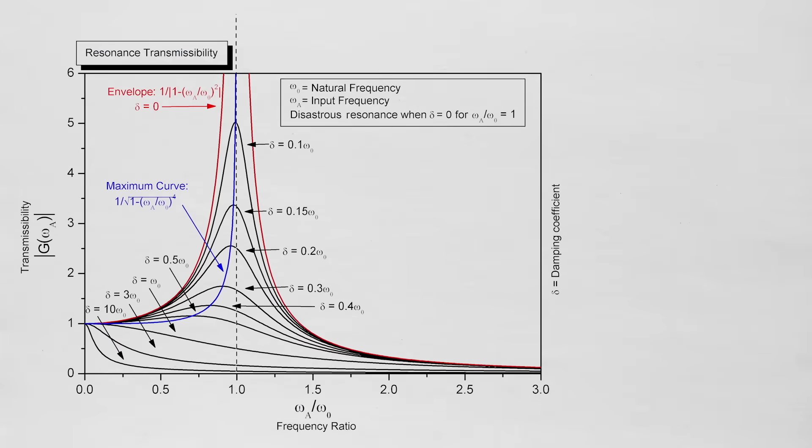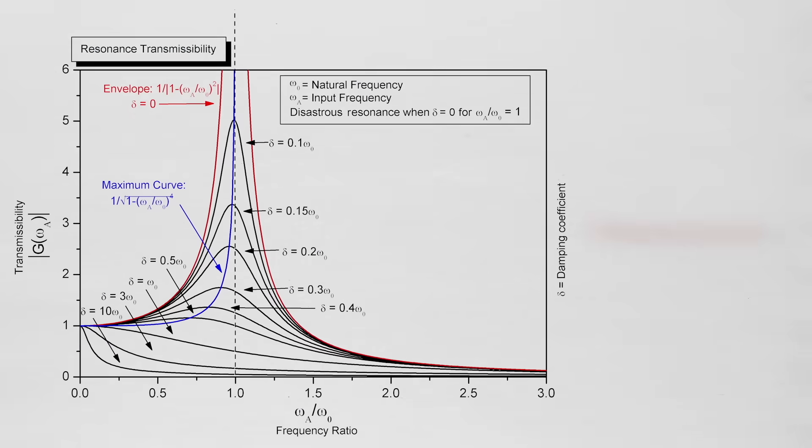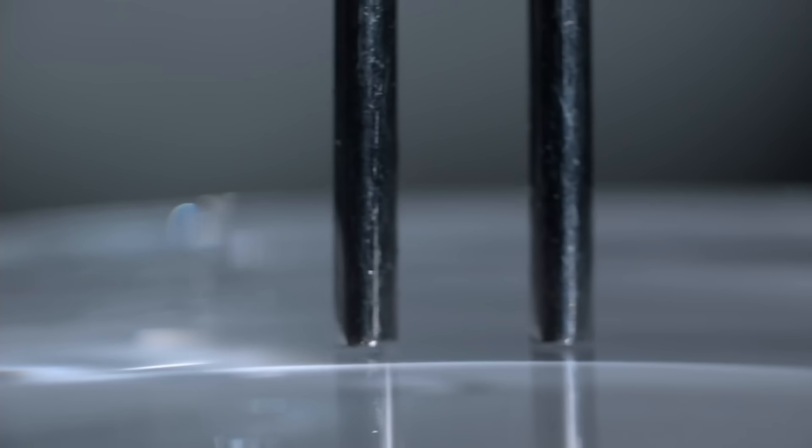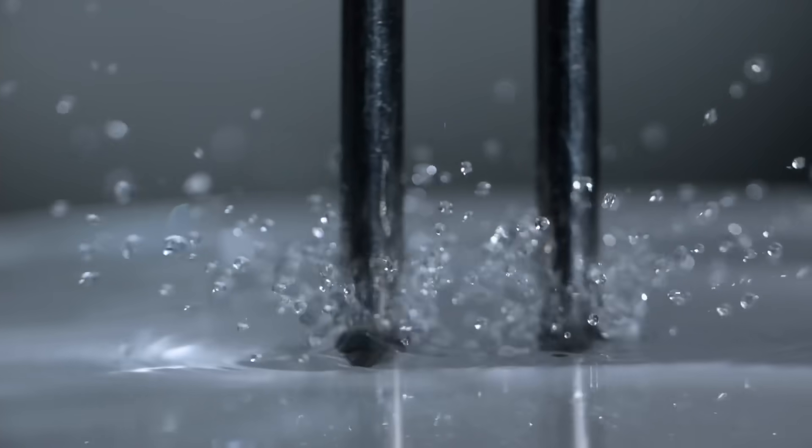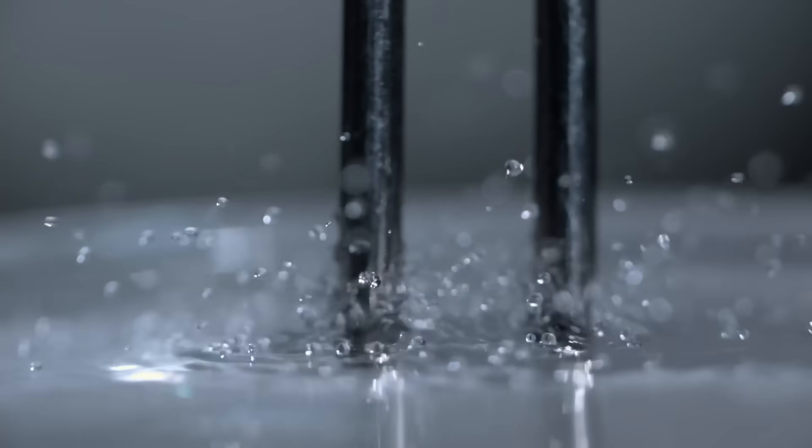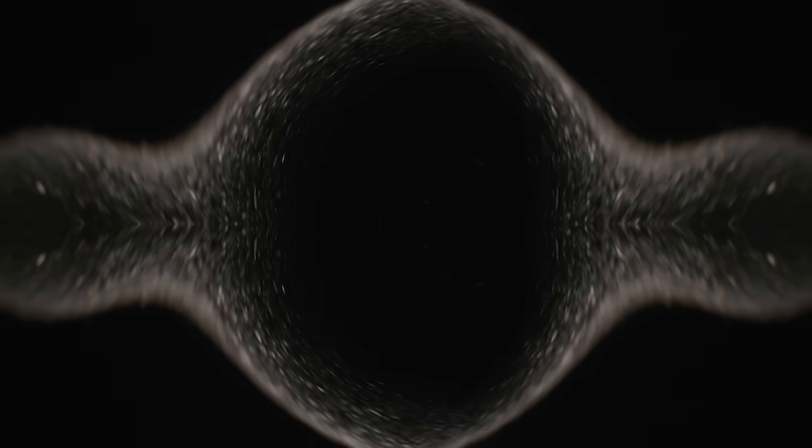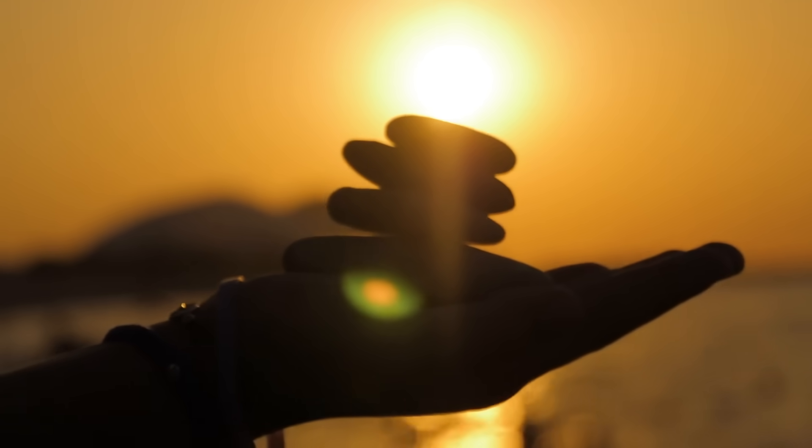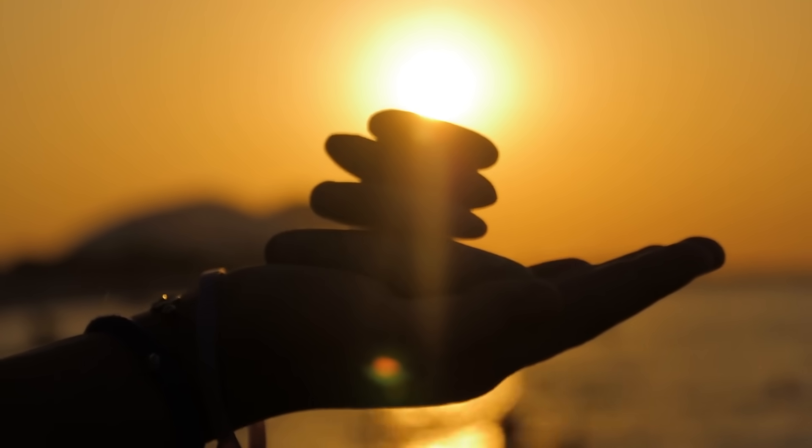The potential influence of music on DNA brings to mind the concept of resonance. Resonance occurs when two objects share similar frequencies, causing one object to vibrate in response to the vibrations of the other. It is possible that the resonant frequencies present in music could interact with the vibrational frequencies of our DNA, creating a harmonious resonance within our cells.